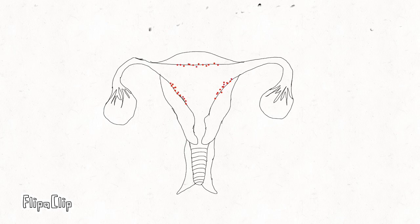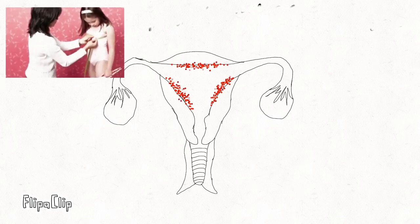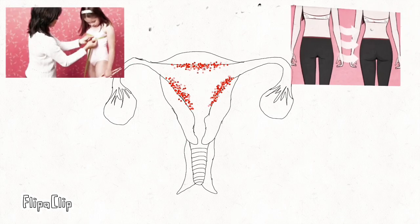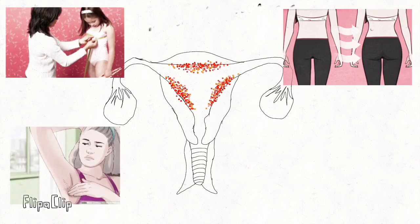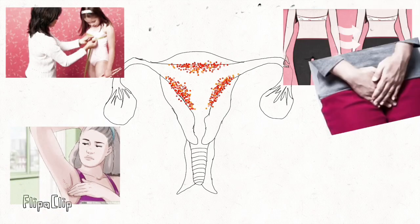When a female human approaches a mature age, she will experience some physical changes such as breast enlargement, hips become firm and broader, and hair grows on the armpit and pubic region.